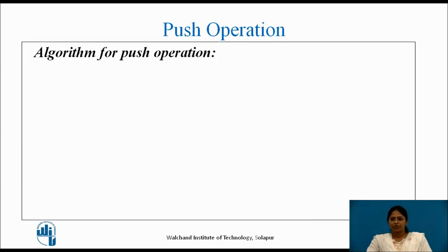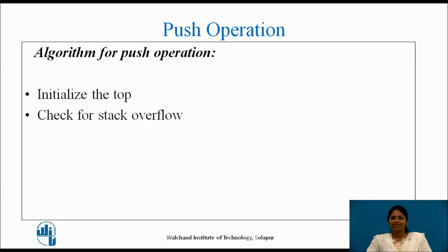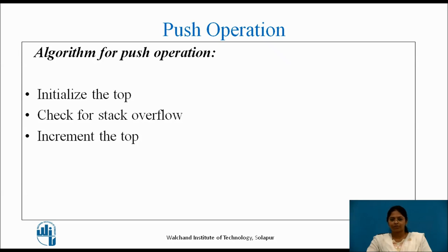Let's see the algorithm for the push operation. The first step is to initialize the top to its proper position so that elements are added from the proper place. The next step is to check for stack overflow, meaning we check whether the stack is full. If all the locations of the stack are filled, the user cannot insert any element. So we check for stack overflow before adding a new element. If the stack is not overflown, we increment the top to the next place and add the element to the stack.